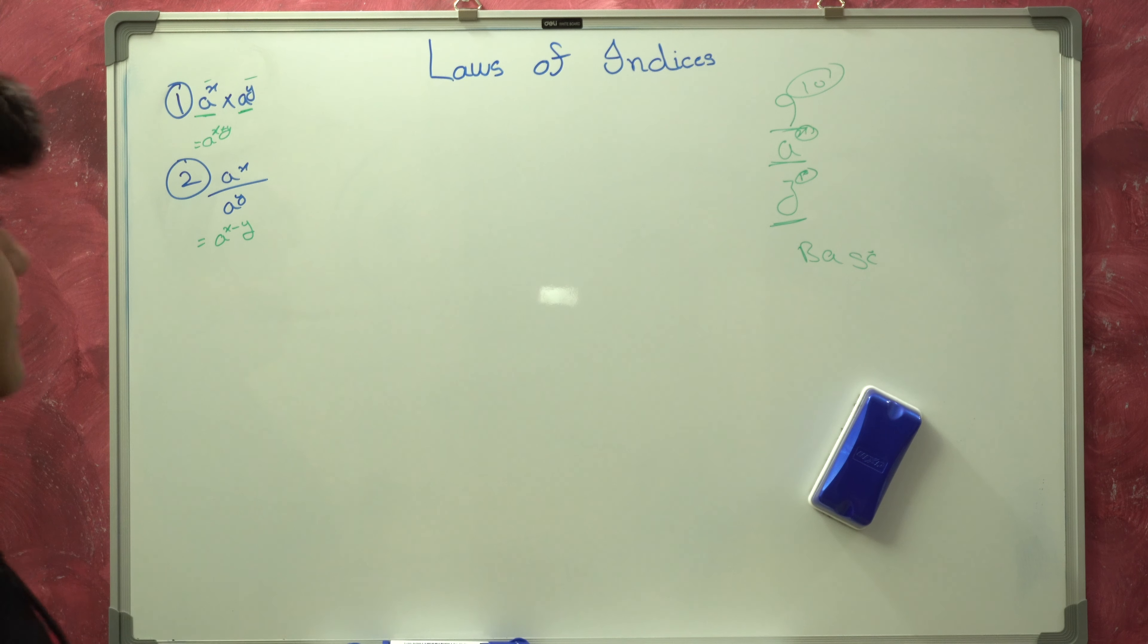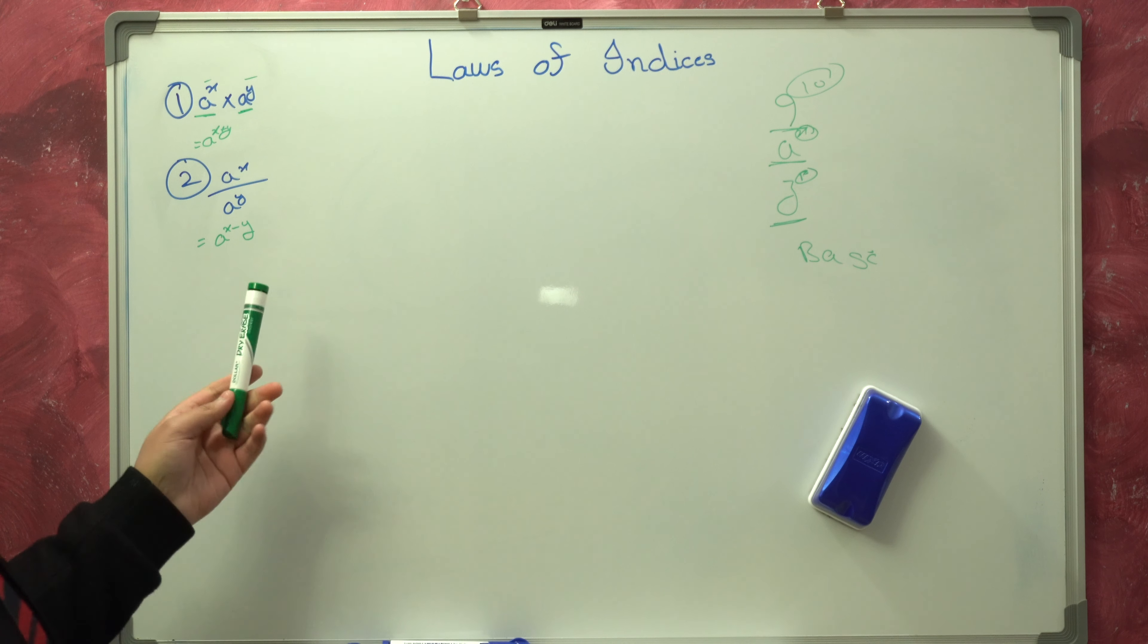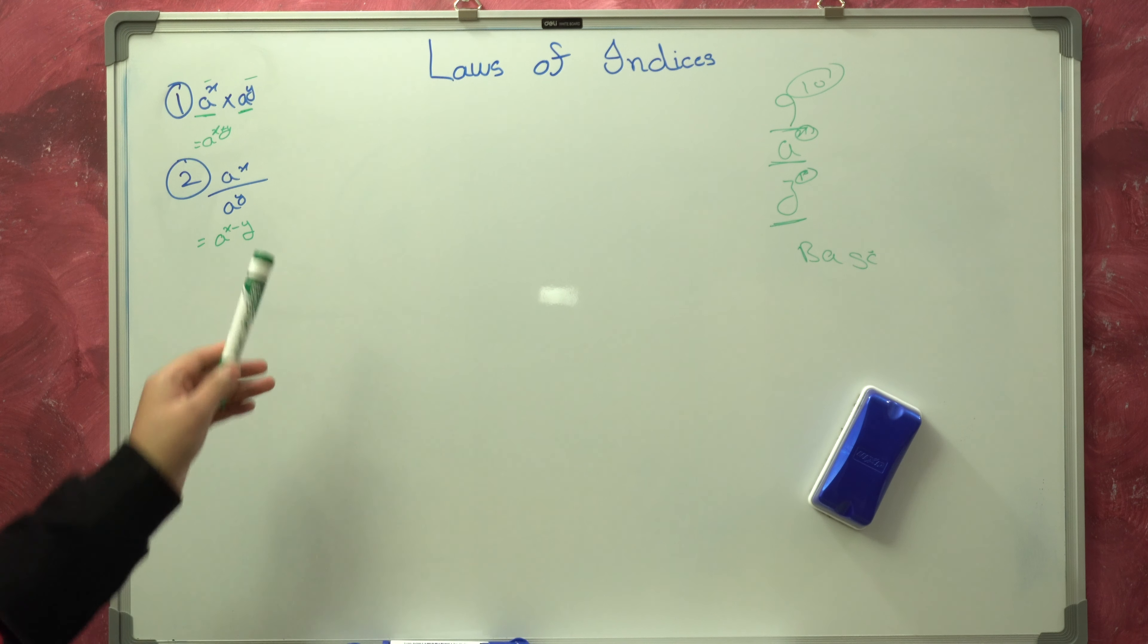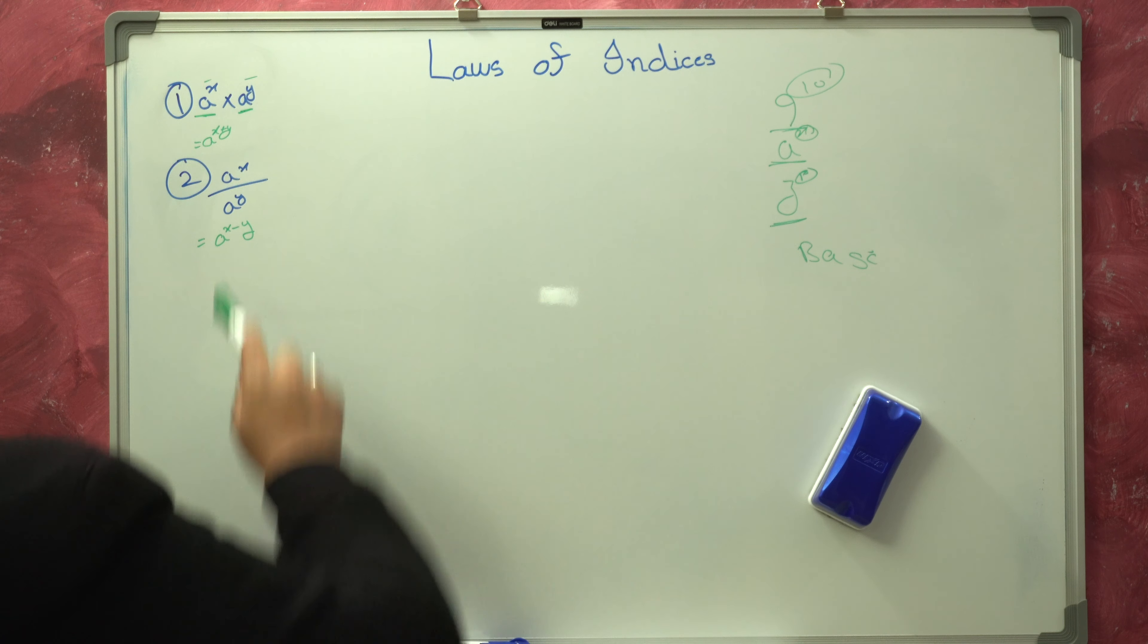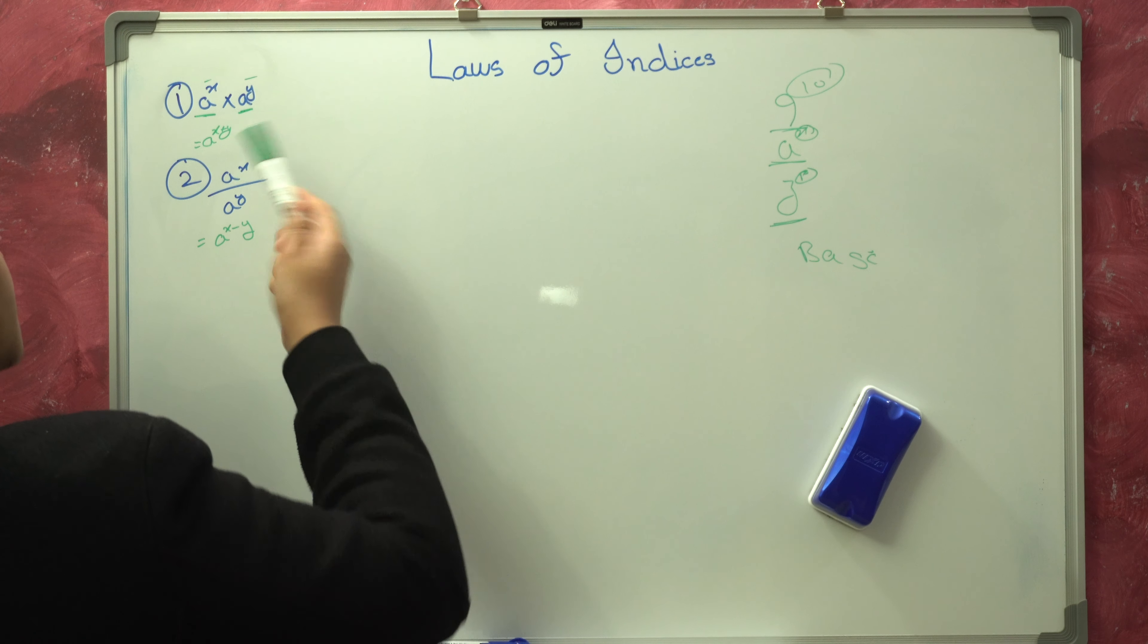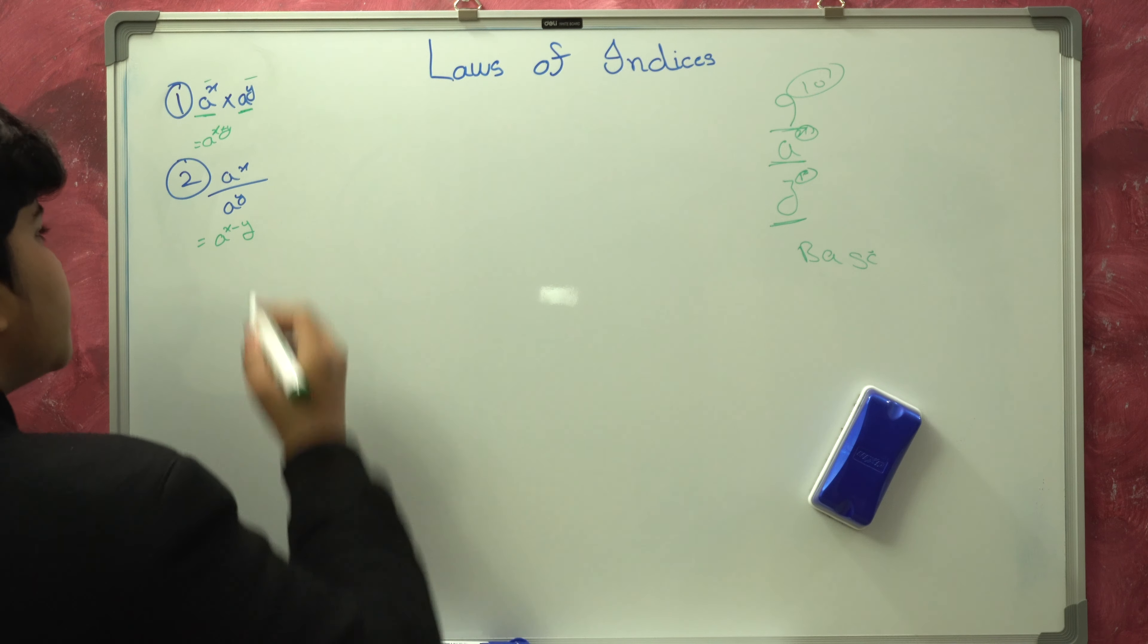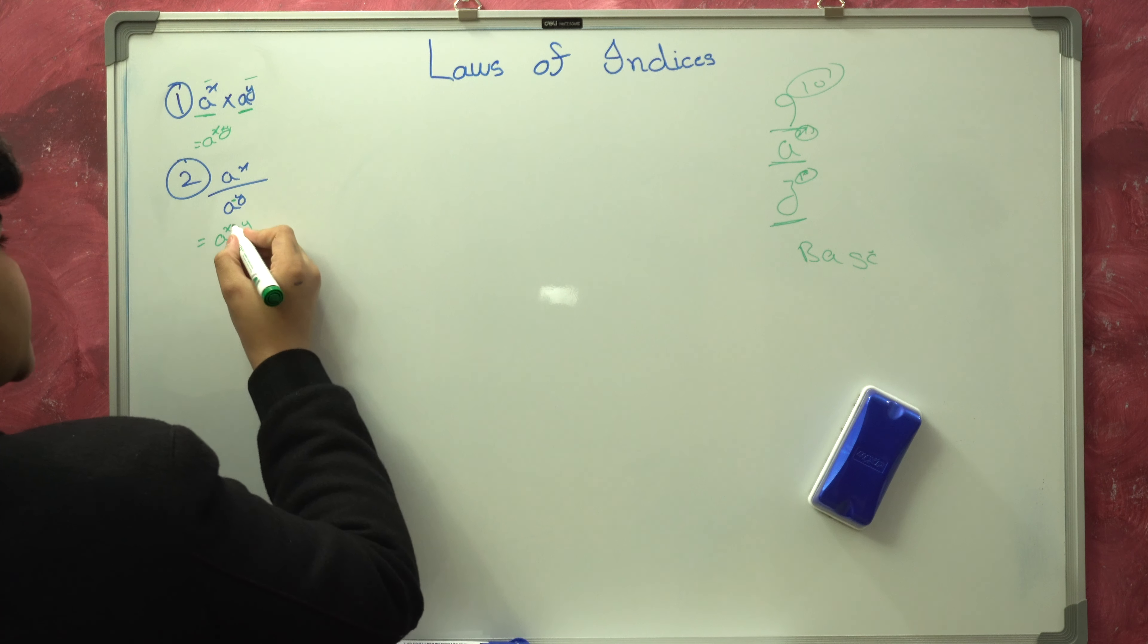Now why minus Y? Because when you are moving the places of the powers, the signs change. Over here, this was positive but when it will go up, it will change into a negative. But if it was a negative over here, then it will change into a positive over here.